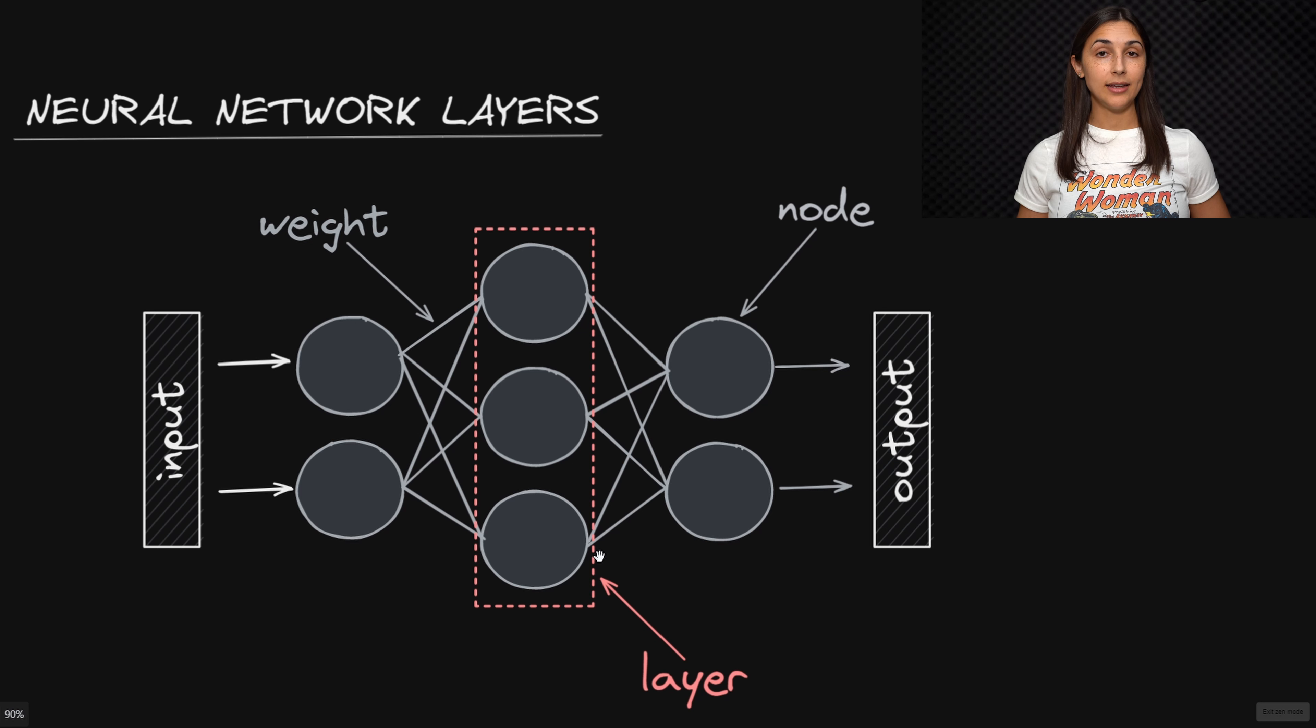A fully connected layer is one that fully connects all of its inputs to all of its outputs via weights. This layer here is actually illustrative of a fully connected layer.